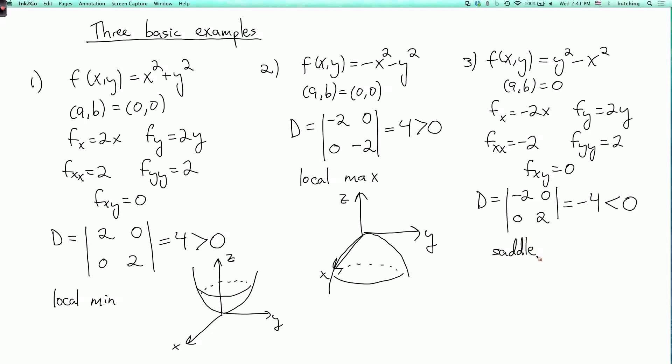So it's neither a local maximum nor a local minimum, and we know that because the graph of this function is the hyperbolic paraboloid, which looks like this. So these three basic examples will help you remember what the test says.